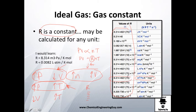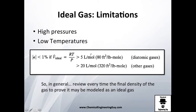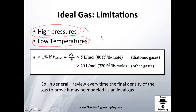Personally, I prefer to memorize one value of R and convert as needed. For example, 1000 liters equals one cubic meter, 10⁶ Pascals equals one megapascal, and to convert Celsius to Kelvin you add 273.15. You can also use kilomoles if needed. Now, limitations: the ideal gas model starts failing at high pressures or very low temperatures.